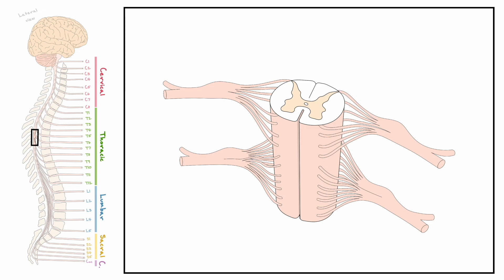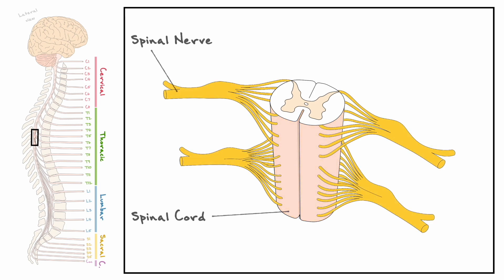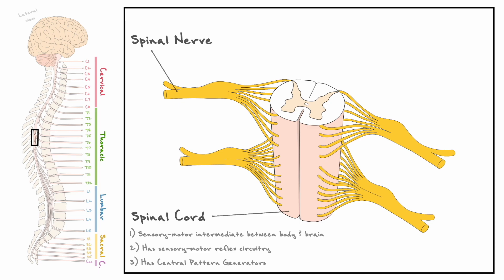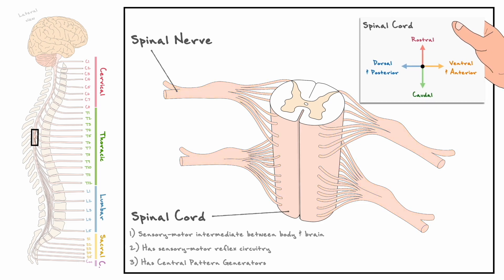This will allow us to establish some important terminology before we discuss the internal anatomy of the spinal cord. We have our spinal cord in the middle and now you can see more clearly what the spinal nerves look like. As a reminder, the spinal cord had three important functions: being the sensory motor intermediate between the body and the brain, having the sensory motor reflex circuitry, and the central pattern generators that produce rhythmic movements. Before we dive into some of the terminology, I want to quickly review the neuroanatomical navigation terms because a lot of the terminology that we will see is based on their logic.